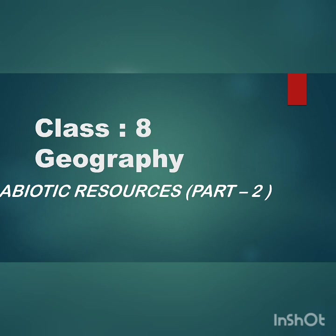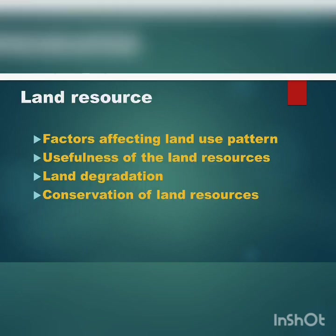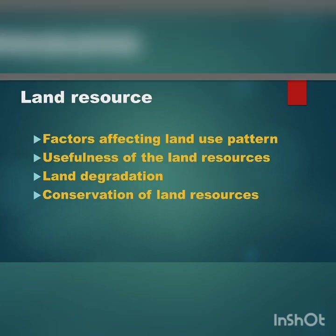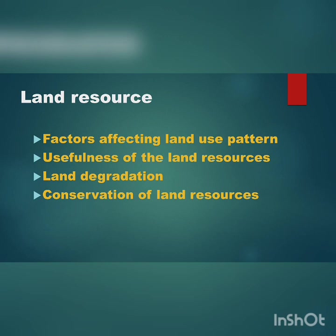In the last part, we have studied about the abiotic resources and land resources. In this part 2, we are going to study about the factors affecting land use pattern, usefulness of the land resources, land degradation and conservation of the land resources. Before starting this part 2, let us have a recap of the last part.